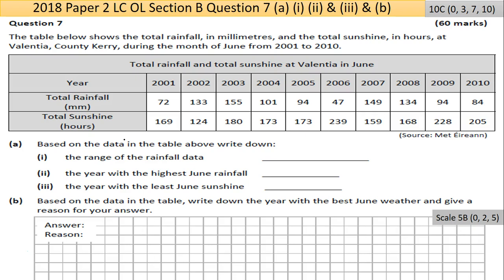That email address is in the description below. So Part A here — let's read the question: the table below shows the total rainfall in millimeters and the total sunshine in hours at Valencia, County Kerry, during the month of June from 2001 to 2010.